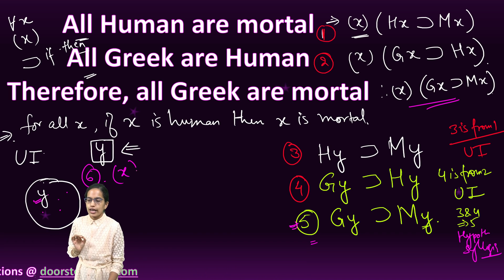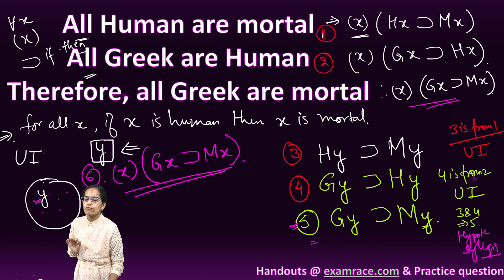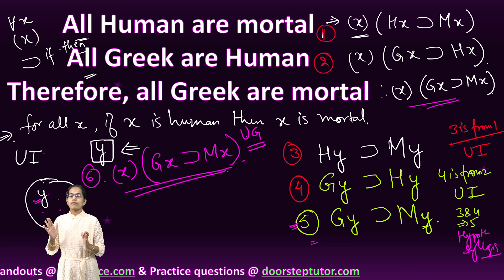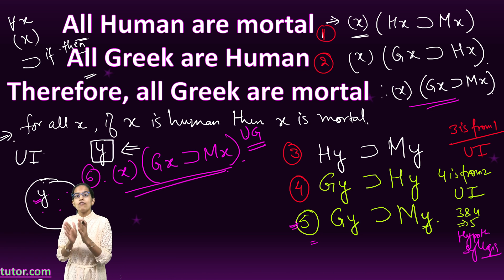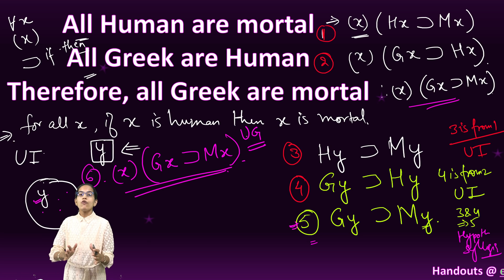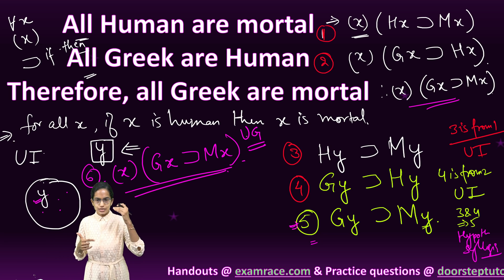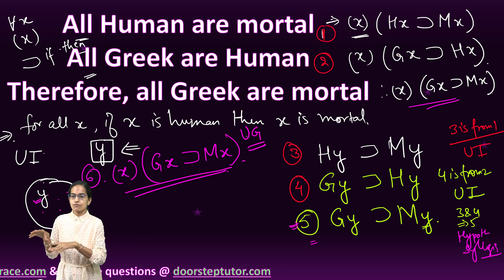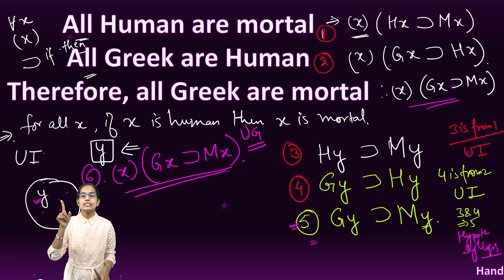Formula 6 states: for all x, if x is Greek, then x is mortal. This is derived through universal generalization. In quantification theory, universal generalization is a rule that allows you to infer a valid generalization from instantiation. Once you do the instantiations and show the result holds for each instance, you conclude it holds for the whole universe — and that is universal generalization.